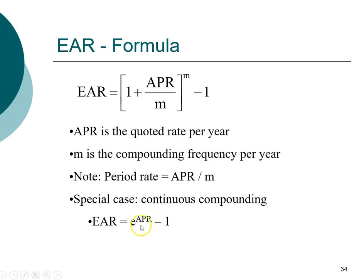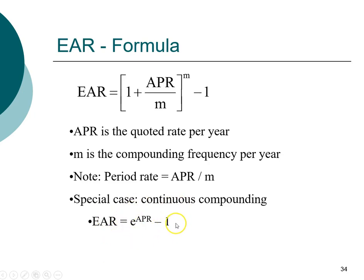There is also a special case when compounding occurs on a continuous basis. Continuous compounding means it occurs more frequently than hourly — every minute, every second, or even faster. This uses the mathematical constant e, which is available on your financial calculator. Continuous compounding is particularly important when working with options, as the option pricing model assumes continuous compounding. In this introductory class we won't work with options, but it's important to be aware of what it means.